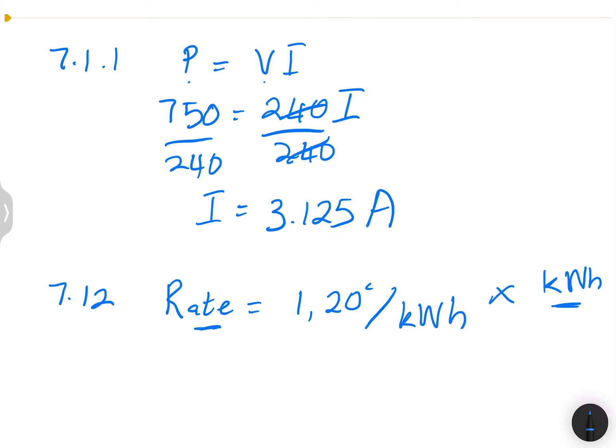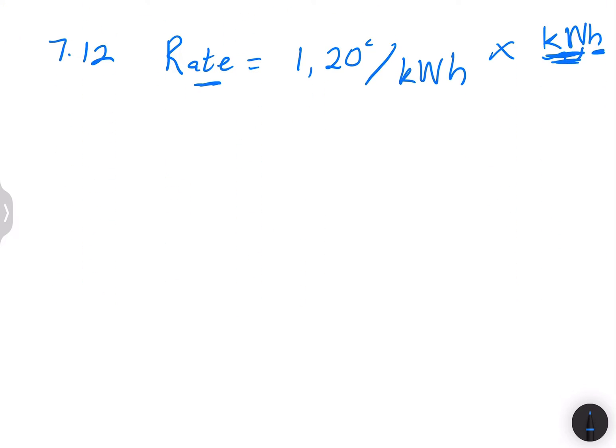So remember, what we're going to do is we need to have our power in kilowatts and our time in hours. So that's the trick behind it. So remember, power is 750 watts. So how do I convert to kilowatts? You just simply divide by a thousand. So it means this will be 0.75 kilowatts. So I'm expressing the power in kilowatts.